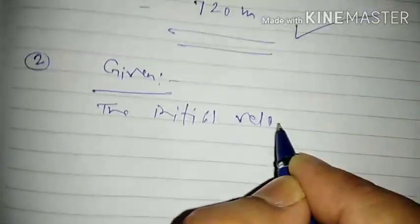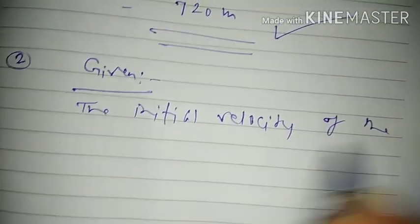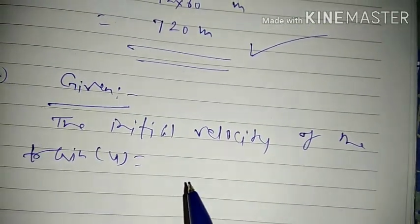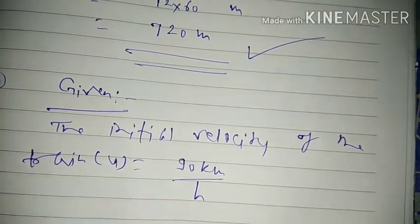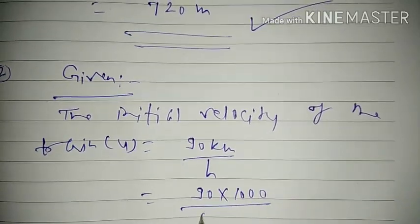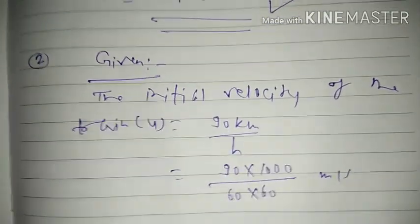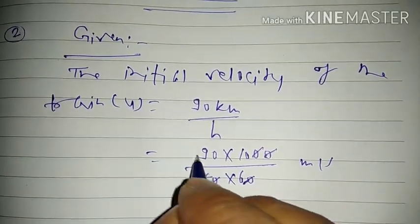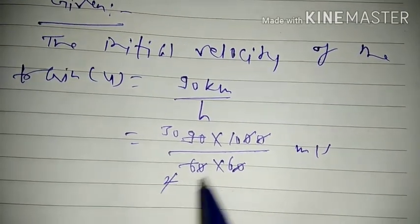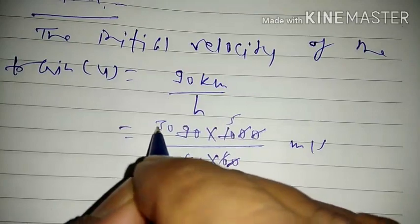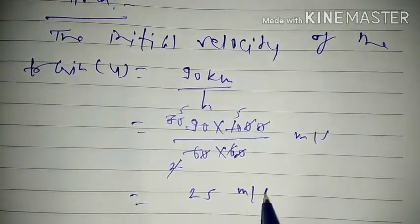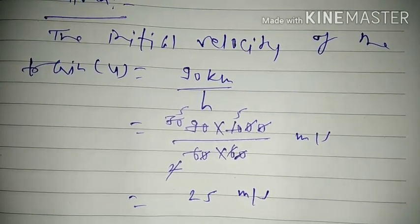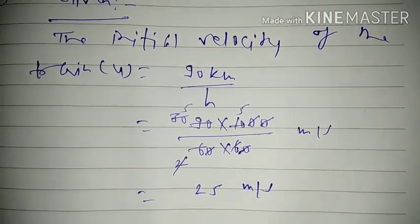Given: the initial velocity of the train u = 90 kilometer per hour. We convert it to SI unit: 90 × 1000 ÷ (60 × 60) meter per second. This equals 25 meter per second. So the initial velocity is 90 kilometer per hour, which becomes 25 meter per second.